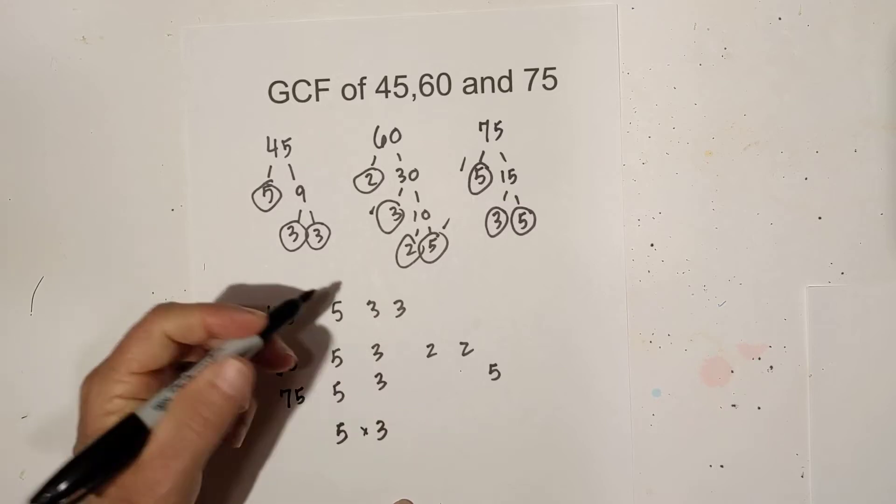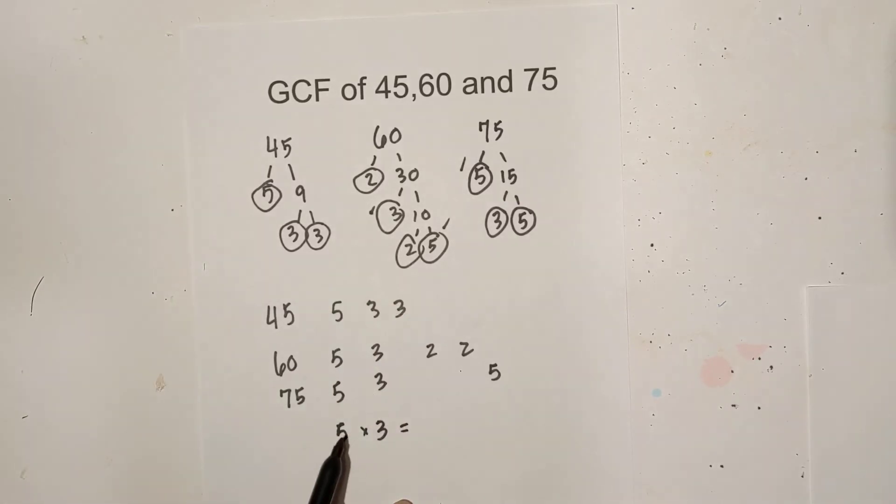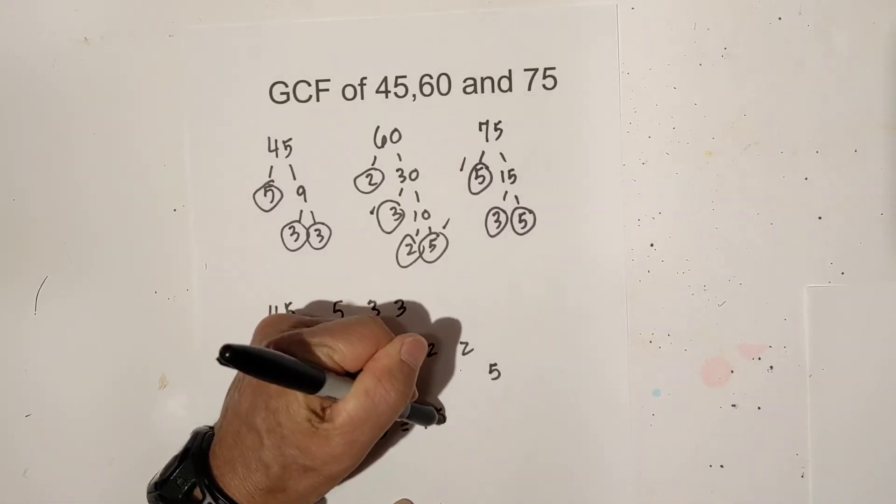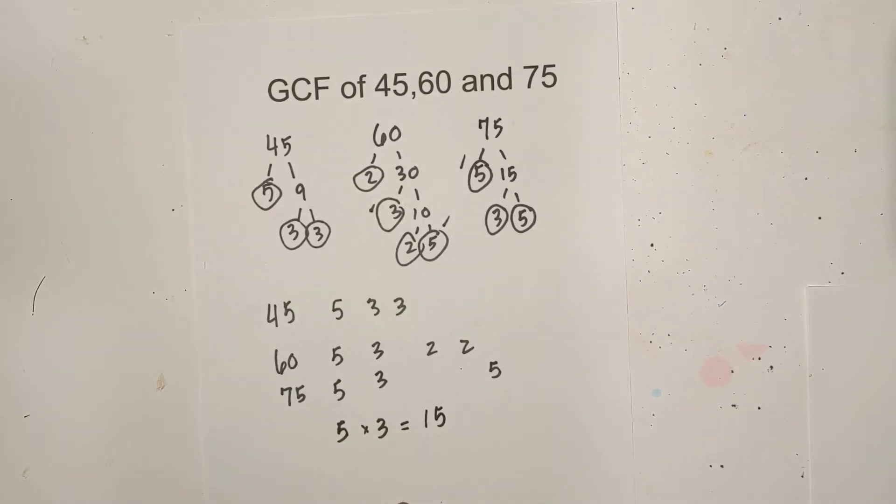So all I do now for the greatest common factor is just multiply 5 times 3 and that's 15. So the GCF of 45, 60, and 75 is 15.